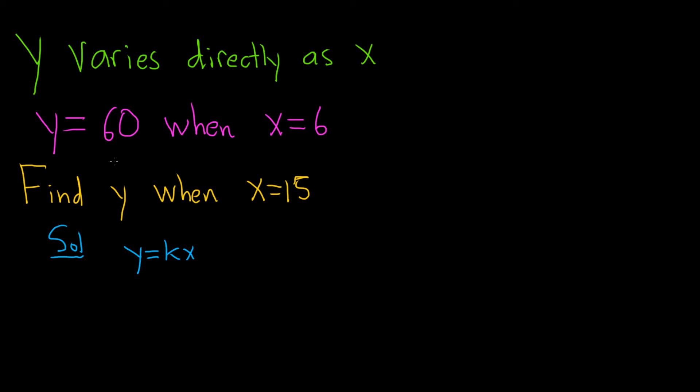Then it says y equals 60 when x equals 6. If we plug these numbers in, we can find k. We have 60 equals k times 6. Now we can divide both sides by 6.